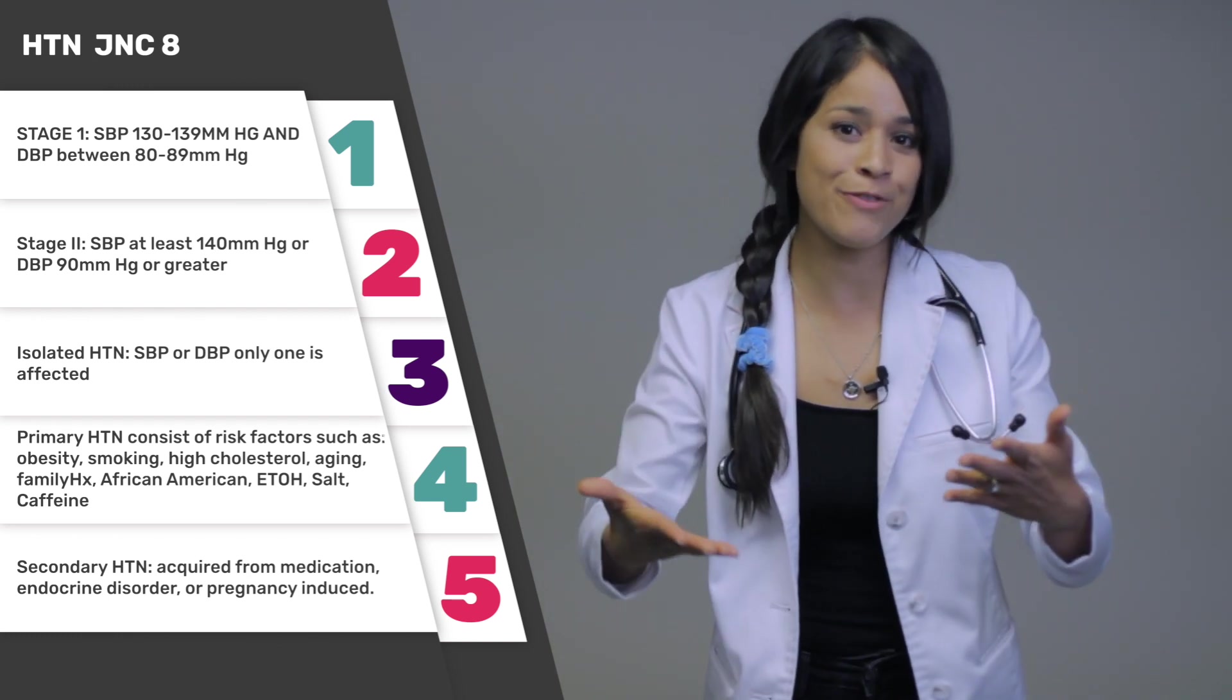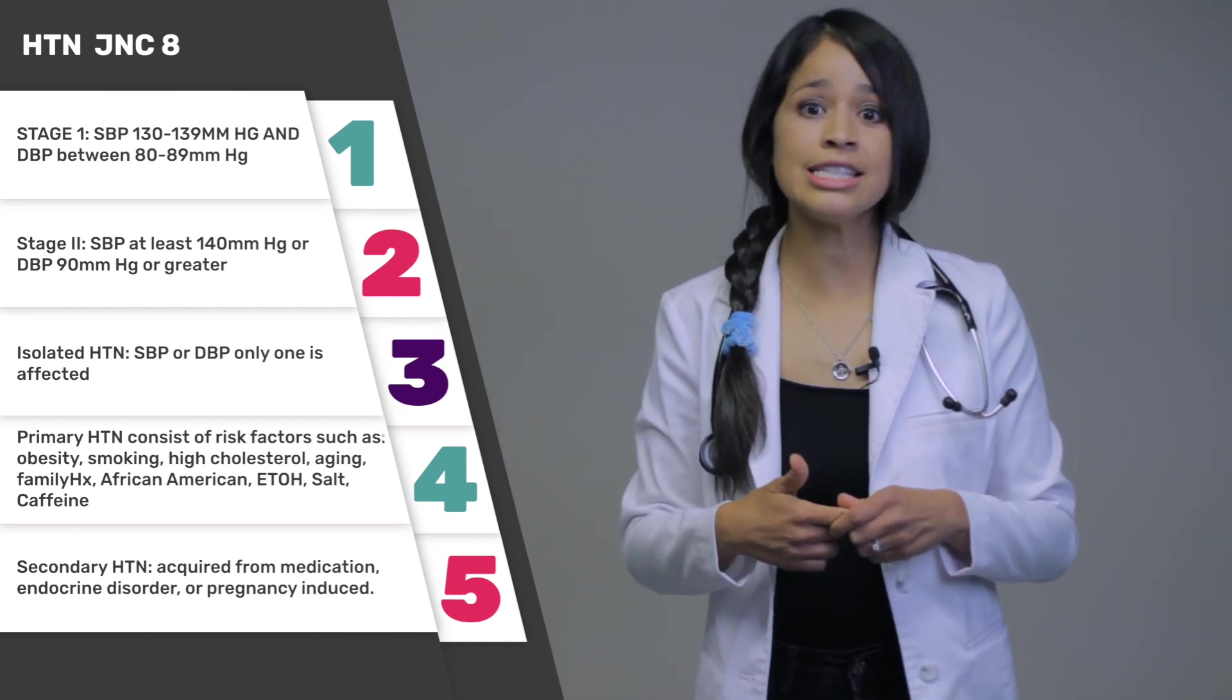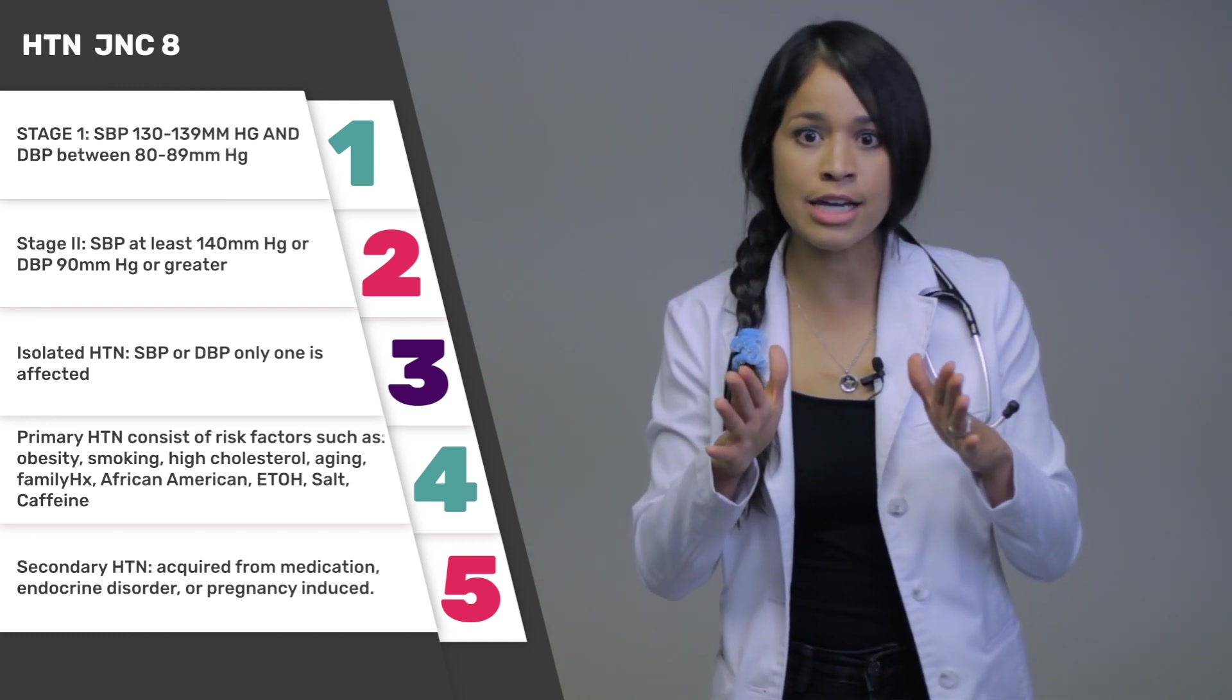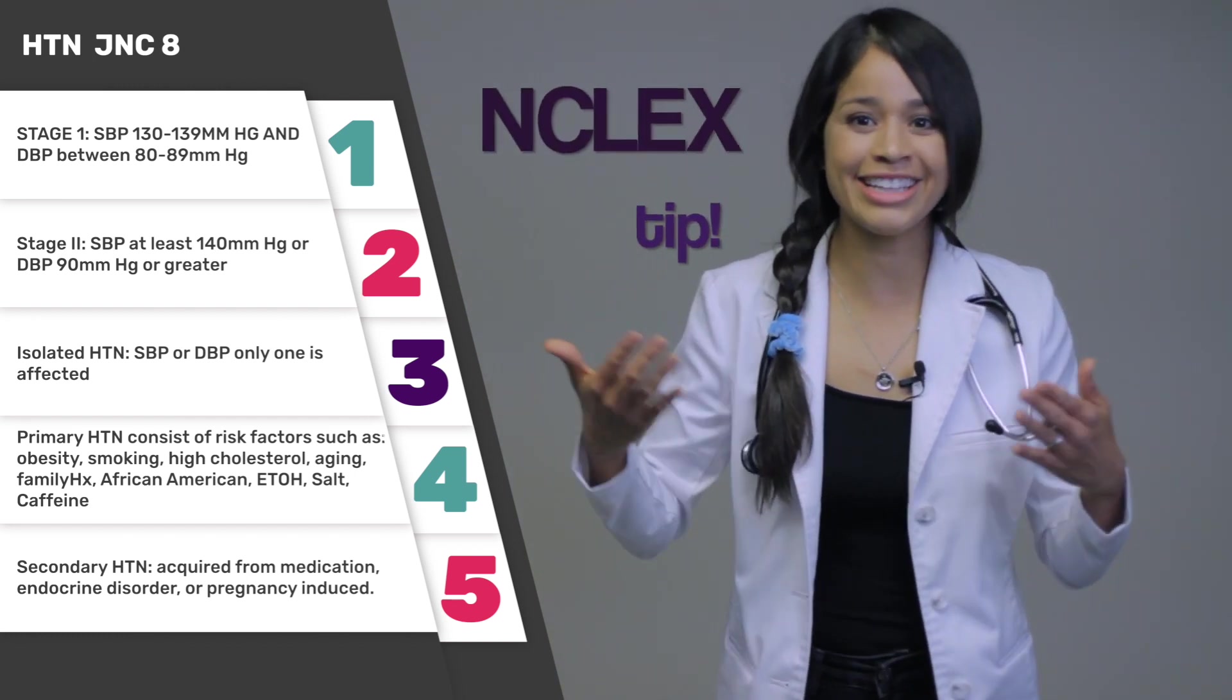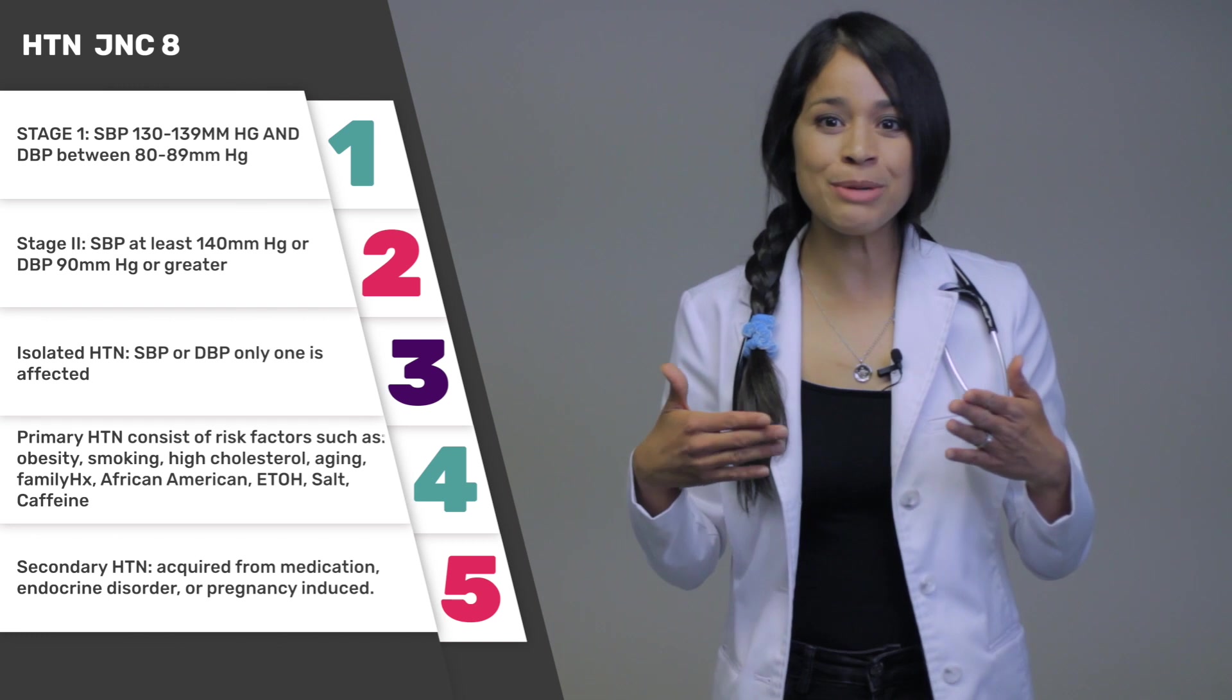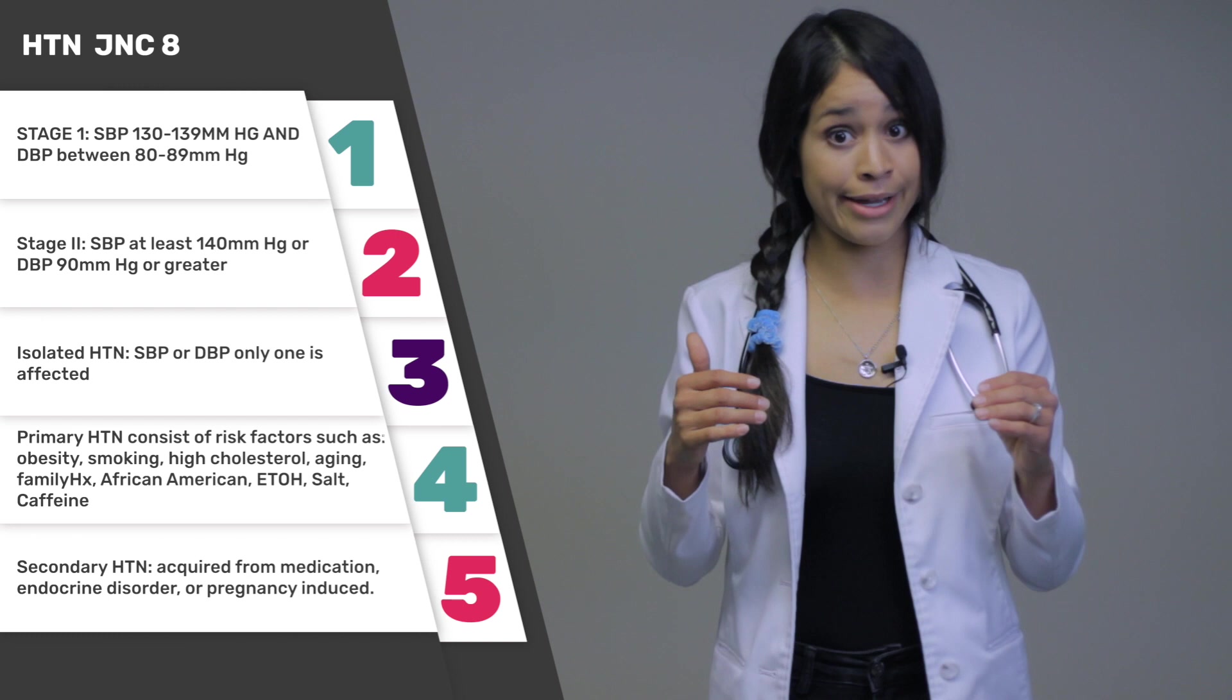And to take it a step further, you also have isolated hypertension. It is either when the systolic is solely affected with the normal diastolic or vice versa. Another NCLEX tip: if your elderly patient comes in with a blood pressure reading of 120 over 110, that diastolic is pretty high. This increases the patient's risk for a cardiovascular event.